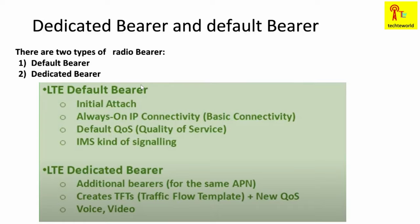As mentioned, there are basically two types of radio bearer: the default bearer and the dedicated bearer. The LTE default bearer is formed during initial attach, and its connectivity type is always-on IP connectivity. The QoS used is the default QoS service, and the kind of signaling used is IMS signaling.